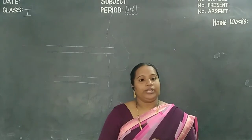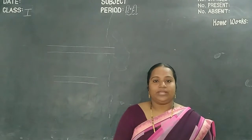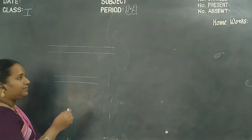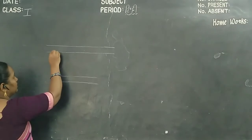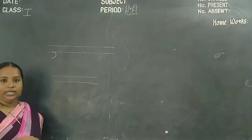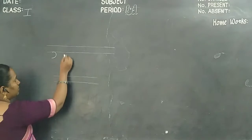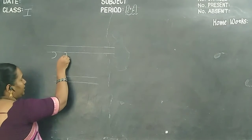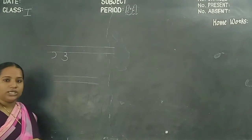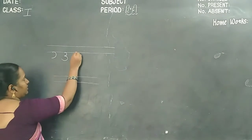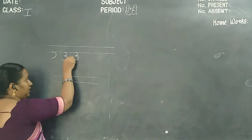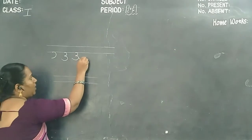Now we are going to learn how to write the letter R. See children, first we use right curve. Second step: right curve, touch to right. Again, right curve. Third step: right curve, right curve, and upward curve.